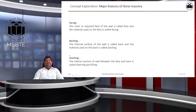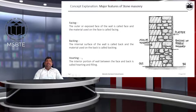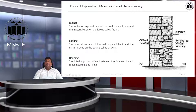Hurting: the material filled between the face and back is called hurting. The same nomenclature used in brick masonry applies in stone masonry as well. As you can see, the outer surface is the face, and the material used on this face is the facing — in this case, ashlar masonry. On the back of the wall, rubble masonry is used as the backing.